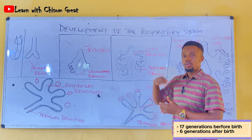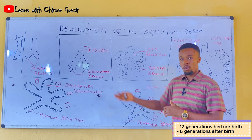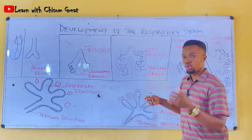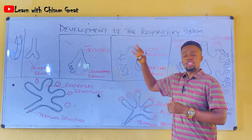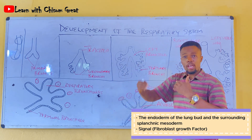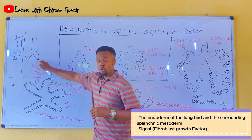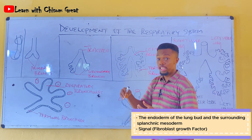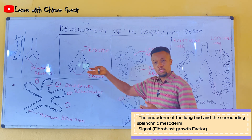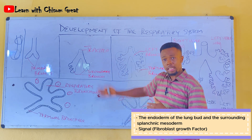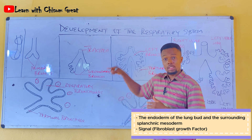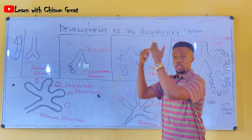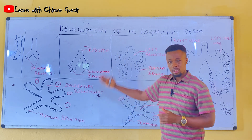After birth, there are about six more divisions that happen. This whole division was initiated by the interaction between the endoderm of the lung bud and the surrounding splanchnic mesoderm. The signal for this division was caused by fibroblast growth factor (FGF).